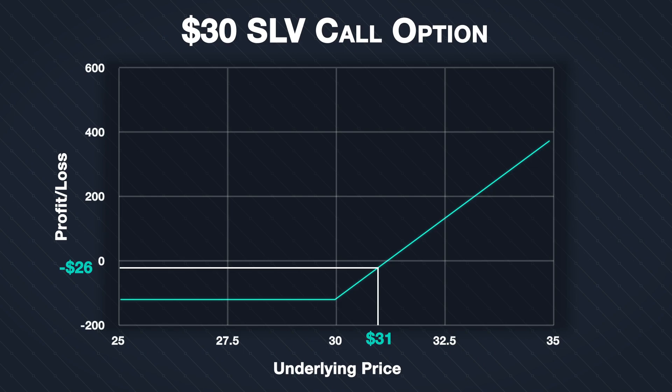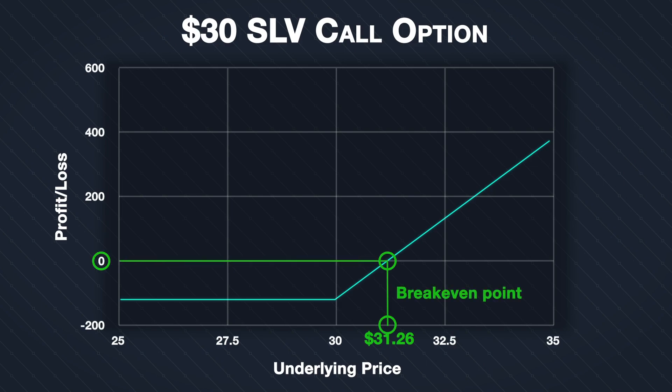Thankfully, this is a simple calculation. In that example, the strike price was thirty dollars and the premium paid was one dollar twenty six. The break-even point is simply thirty dollars plus one dollar twenty six, which equals thirty one dollars and twenty six cents. This means that if the price of SLV is exactly thirty one dollars and twenty six cents when the call option expires, the trade will have made precisely zero dollars — no profit, but no loss either. At this price point, the call will expire with a value of one dollar twenty six cents, equal to the premium paid. As the value at expiry is the income and the premium paid is the expense, when these two are equal the trade makes zero dollars.